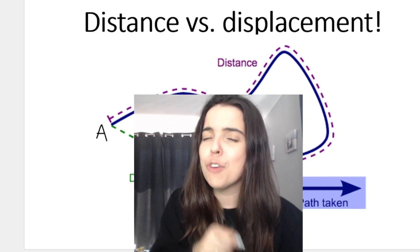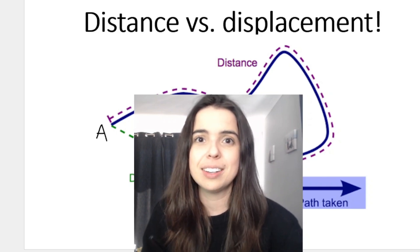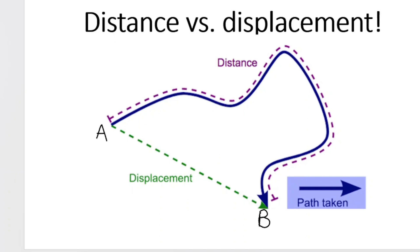Let's take a look at this picture to further understand the differences between displacement and distance. Distance is essentially the total path length traveled. Let's pretend you're on a walk and you decide to walk along the perimeter of a park. You start at position A, walk all the way around this little dotted purple line, and end up at position B. Let's say a watch tracked your distance and told you that you traveled five kilometers — this is your distance, the total path length traveled.